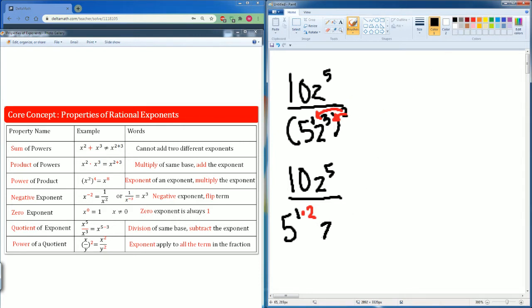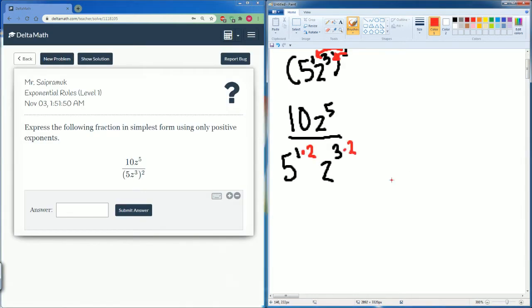Then you have your z which is z to the third power. Now it's going to be multiplied by the 2 because that is the power of a product. Exponents of an exponent you multiply the exponent. So nothing happened to the 10z to the fifth power that remains on top. On bottom it becomes 5 to the second power and z to the sixth power.